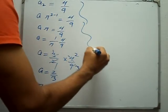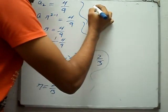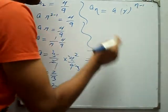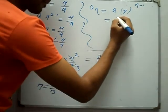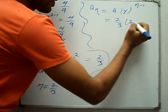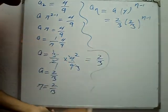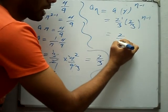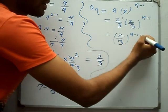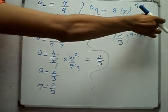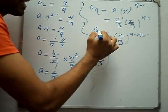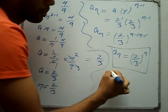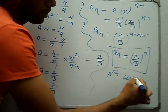Now we find the nth term. Using the formula, An equals A times R to the power n minus 1. Adding the exponents by the power rule, we get the nth term An equals 2 over 3 to the power n. This is the nth term we had to find.